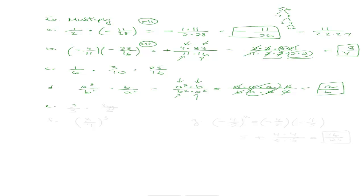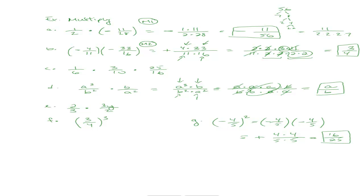Try two-thirds times three y over two on your own. Also try three-quarters to the third power. Here's a similar example: negative four-fifths squared. That just means negative four-fifths times negative four-fifths. A negative times a negative is positive, giving four times four in the numerator and five times five in the denominator. Nothing reduces, so the answer is sixteen over twenty-five.